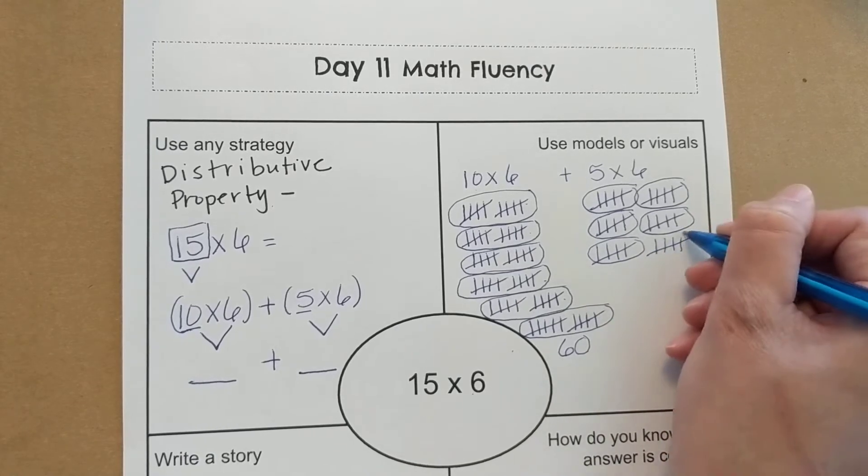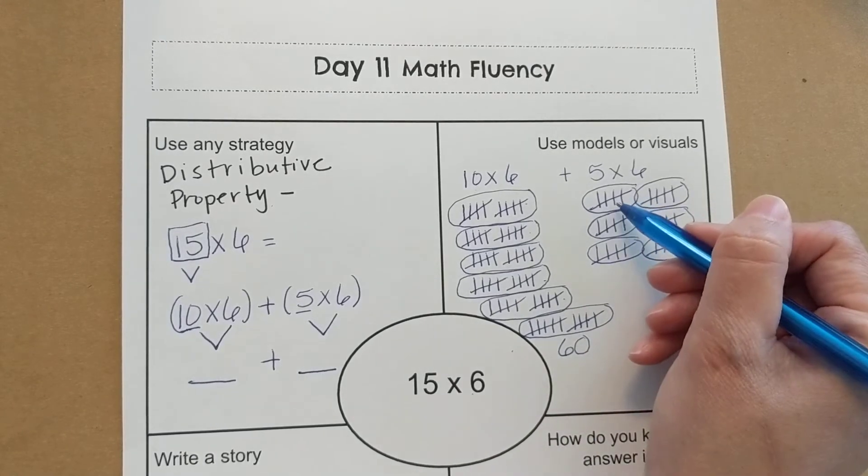1, 2, 3, 4, 5, 6 groups. Then you would count by 5s.